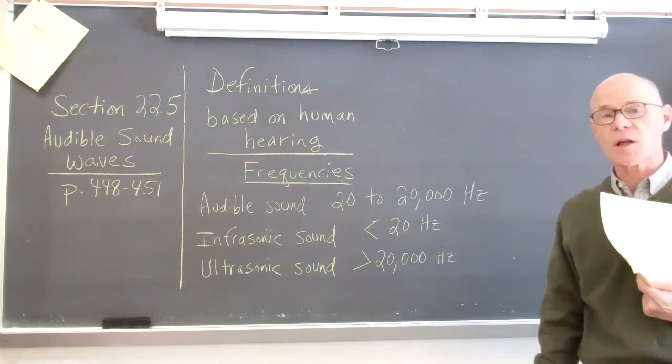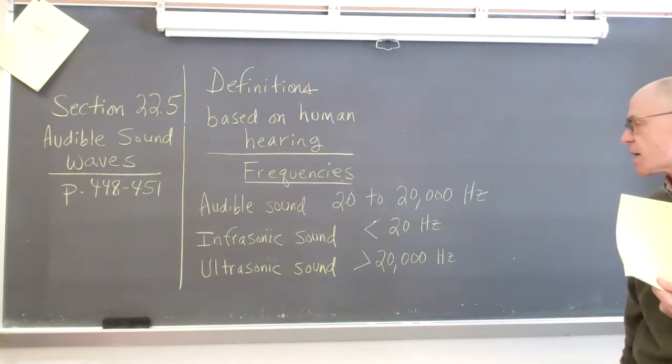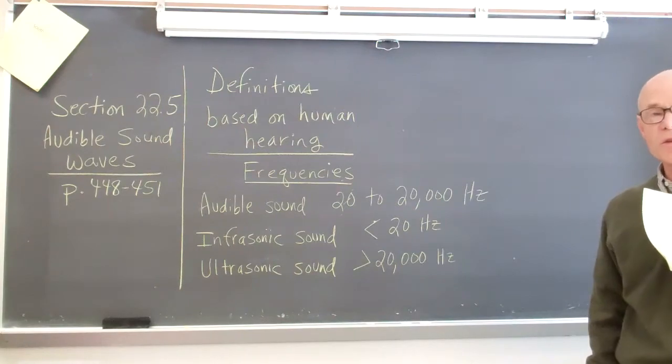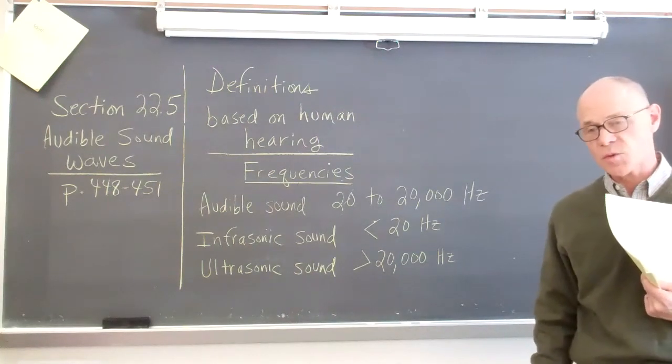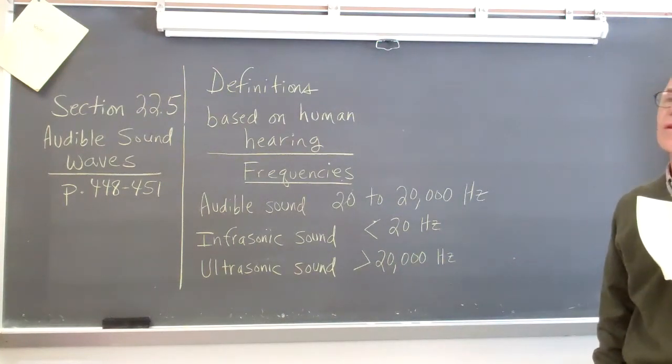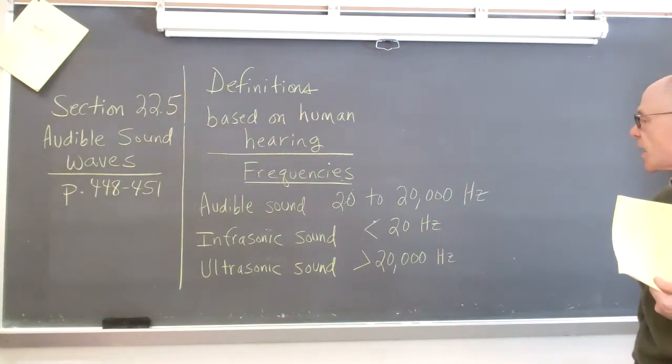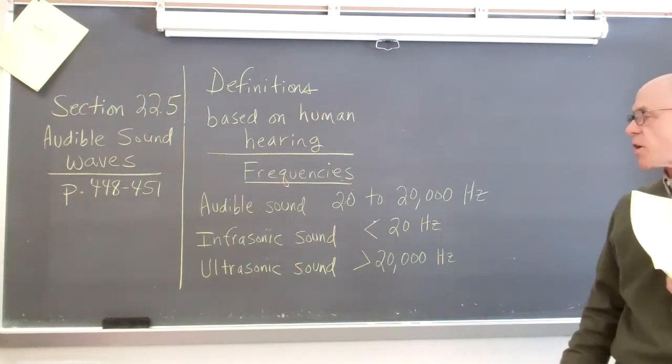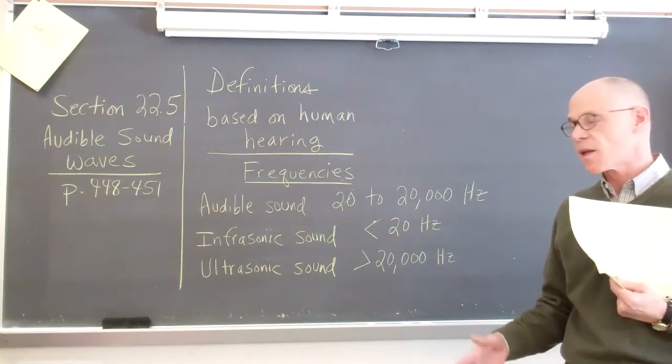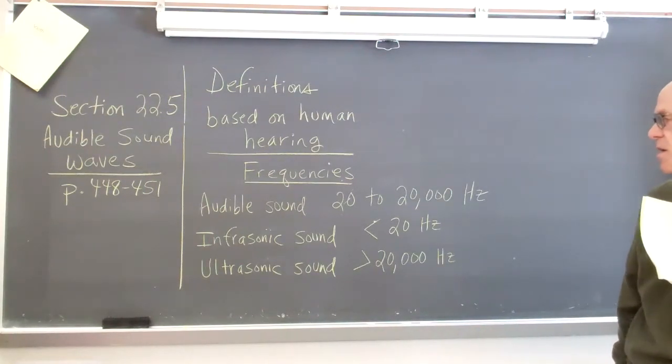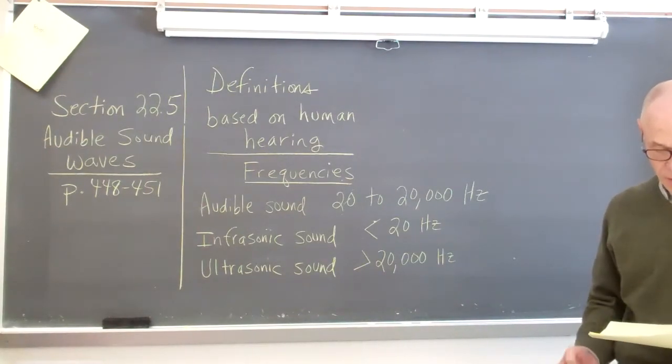When we talk about medical ultrasound, we're not talking about sound at 20 or 22 or 25 or 30,000 hertz. We're talking about millions of hertz. But as a generally accepted book definition, anything above 20,000 hertz is considered to be in the ultrasonic range.